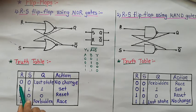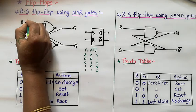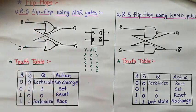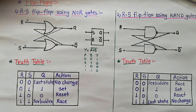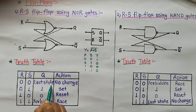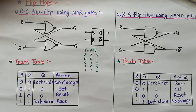First condition: if R is equal to 0 and S is equal to 0. Since if any one input of a NOR gate is high its output is low, but here both inputs are 0. The flip-flop remains in the last state. That is, the action of the flip-flop is no change.